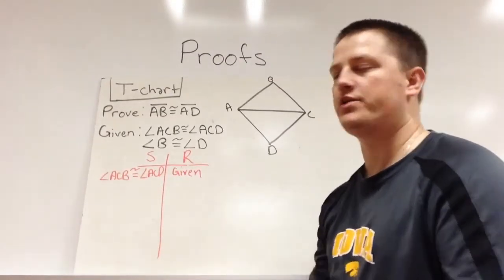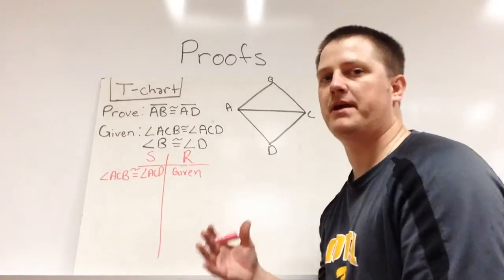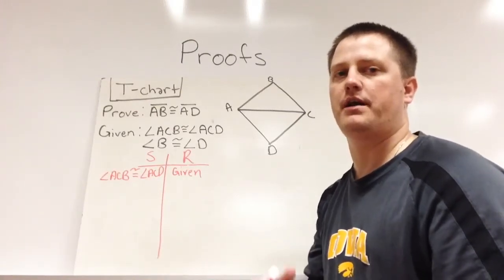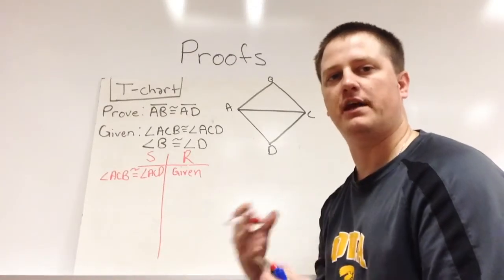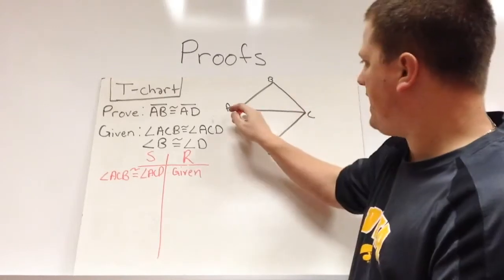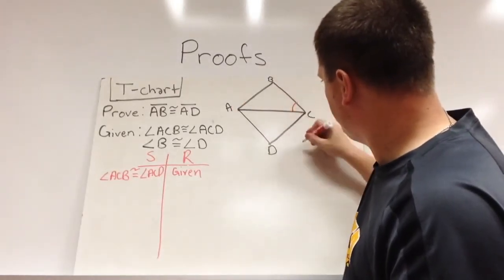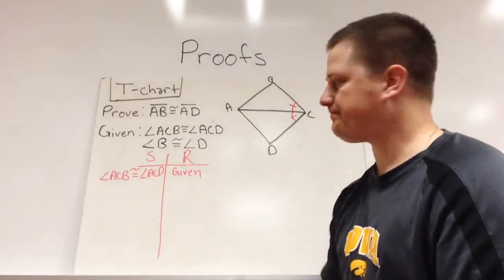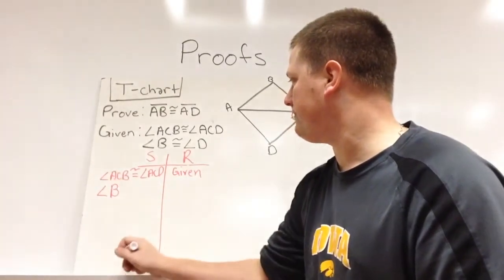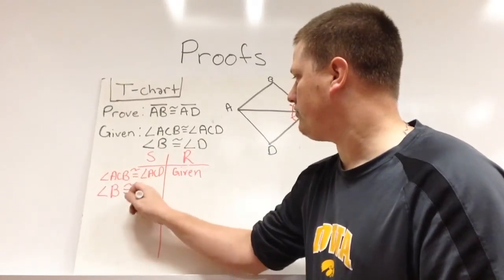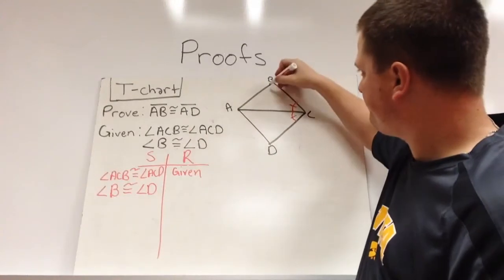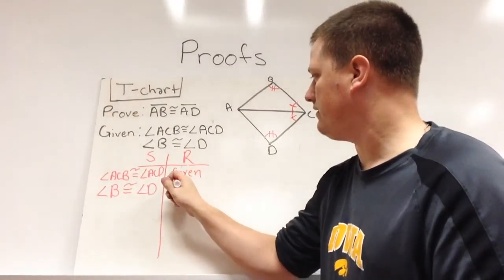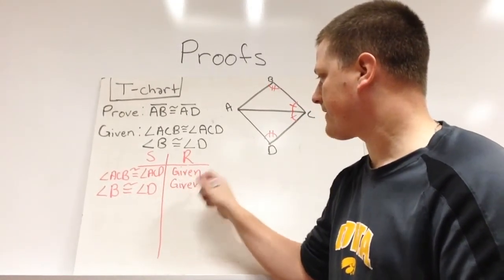After we've written down our first given, we should always mark it within our picture. Now sometimes with the pictures you might want to draw triangles and shapes kind of separate so you can kind of see what's going on. I'm going to leave these together and I'll help you with the separated pictures in class as you do proofs. So ACB, that angle, is congruent to ACD. So I'm going to mark them as congruent. Next, we've got angle B is congruent to angle D. So angle B right up here is congruent to angle D. The reason we know that is it is given.